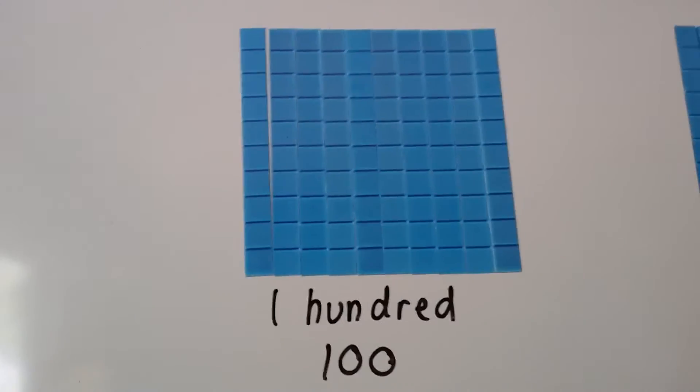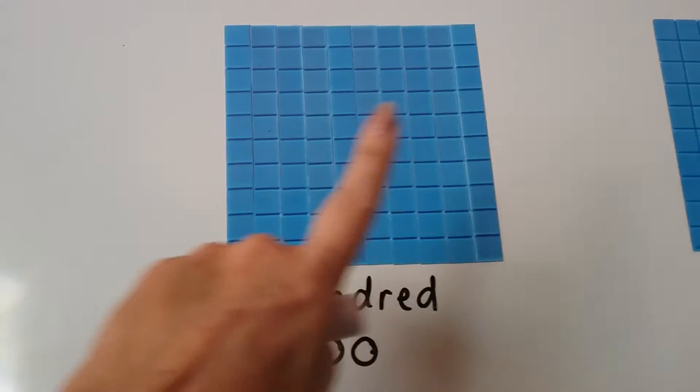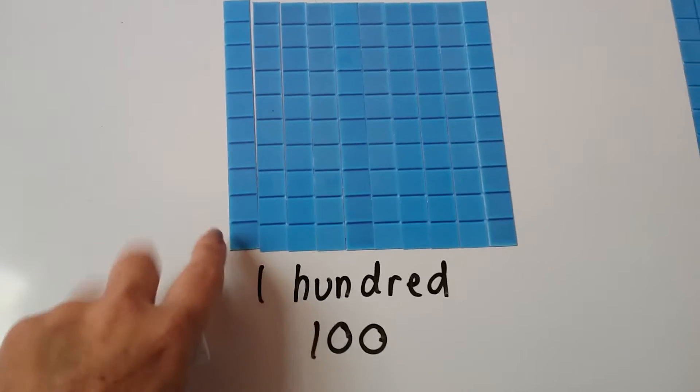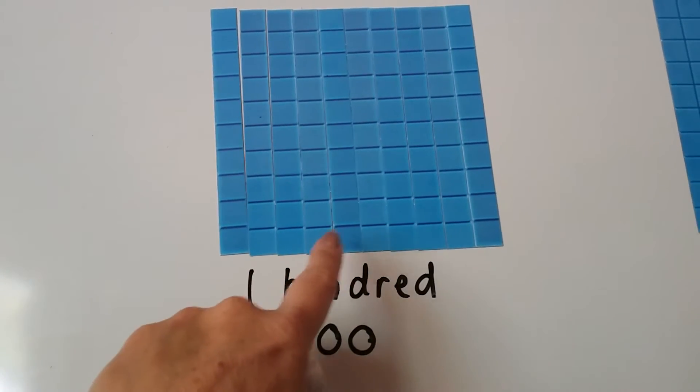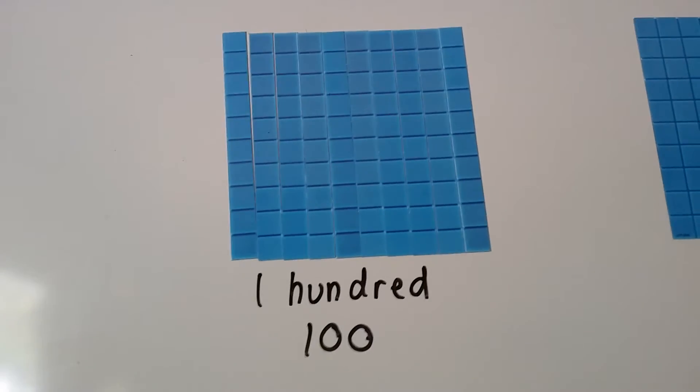Here we have a hundred here, and when they're all together it makes a hundred square, and these can all be pulled apart. See? And there's 10 of them. 1, 2, 3, 4, 5, 6, 7, 8, 9, 10. 10 tens make 100.